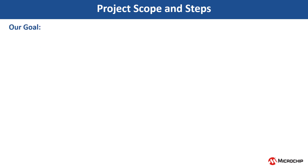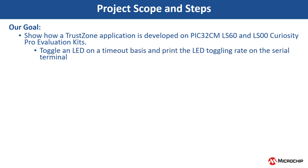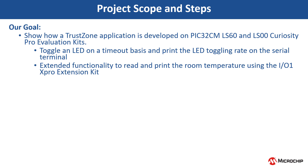Our goal in this video is to show how a TrustZone-based application is developed on PIC32CMLS60 and LS00 Curiosity Pro Evaluation Kits. The demo toggles an LED on a timeout basis and prints the LED toggling rate on the serial terminal. Also, the demo has extended functionality to read and print the current room temperature using the IO1 Xplained Pro Extension Kit.